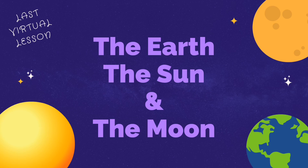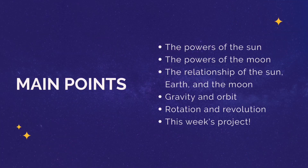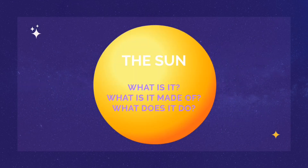Hey fourth grade, welcome to our last and final virtual lesson. We're going to change it up pretty dramatically this week and talk about the earth, the sun, and the moon. Here are the main points I'll be discussing: first we'll start out with the powers of the sun, then the powers of the moon, then we'll get into the relationship of the sun, the earth, and the moon, talk about gravity and orbit, and also what rotation and revolution mean. Then we'll end with this week's project.